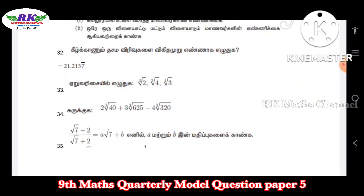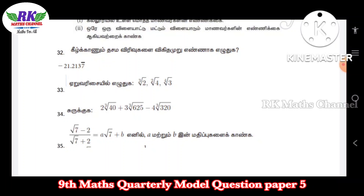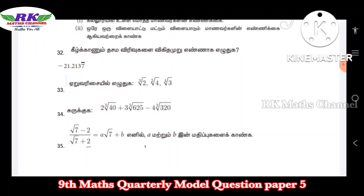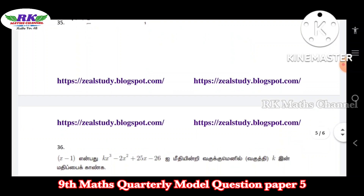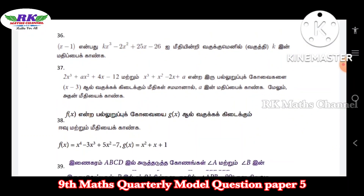If you look at question 35 — A value, B value — look at rationalization in that topic. I think exercise 3.7, problem number 3 or 4. That is an important question. Question number 36: kx³ minus 2x² plus 25x minus 26.